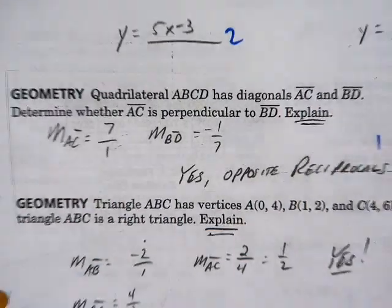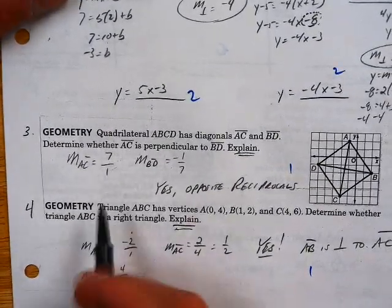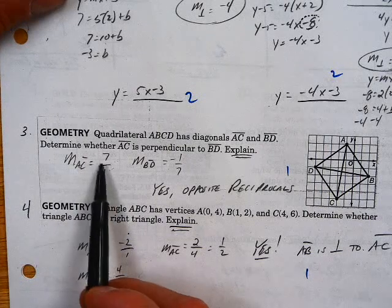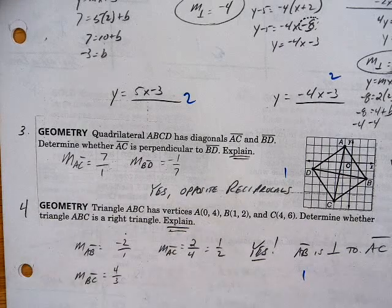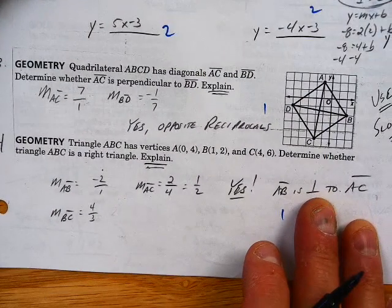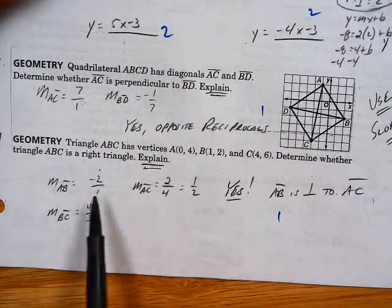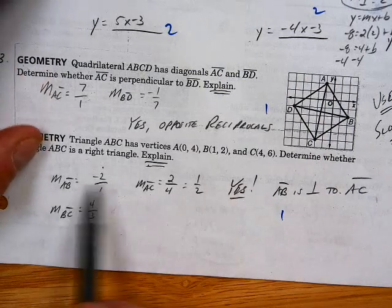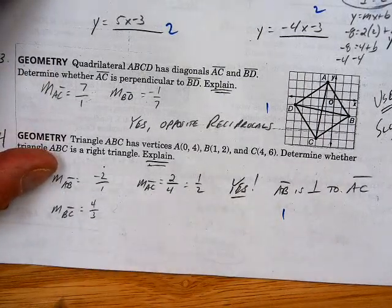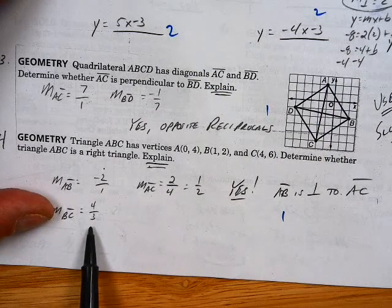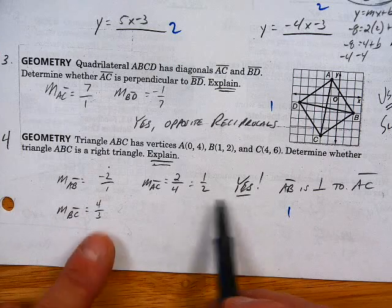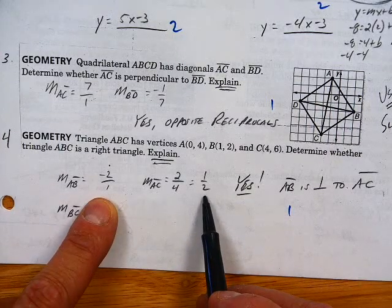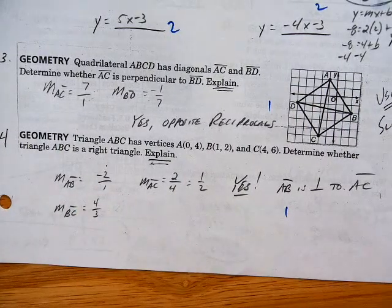Number 3 — just find your slopes. Notice the notation I use is really quite nice: slope of AC, then it's obvious what slope I'm finding. Slope of BD is negative 1 seventh — they're opposite reciprocals, so yes, they are perpendicular. On this one, I've got three sides of a triangle, so I found slope of AB, which was negative 2. Slope of BC was 4 thirds, but there's another side. Slope of AC is 1 half, so yes, they are opposite reciprocals — so yes, it's a right triangle.